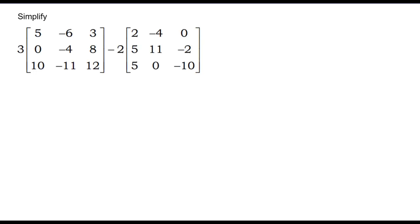Here's a case where I have to distribute and then subtract. What I'll choose to do is multiply by negative 2 to everything and add. So basically, I have 15, 0, 30, negative 18, negative 12, negative 33, 9, 24, 36. And to this, I'll take and add now because I'm going to distribute the negative 2 through.